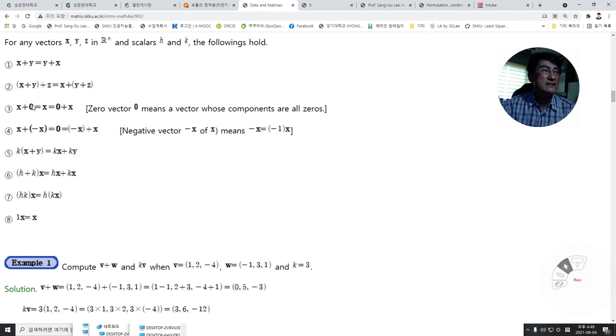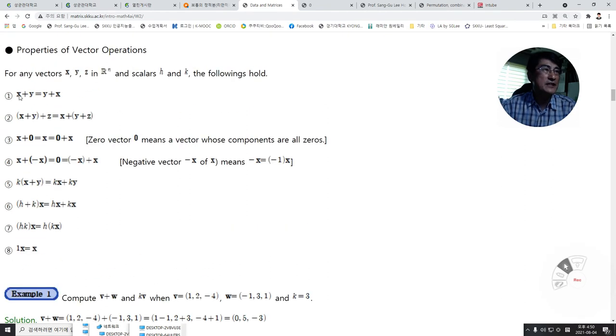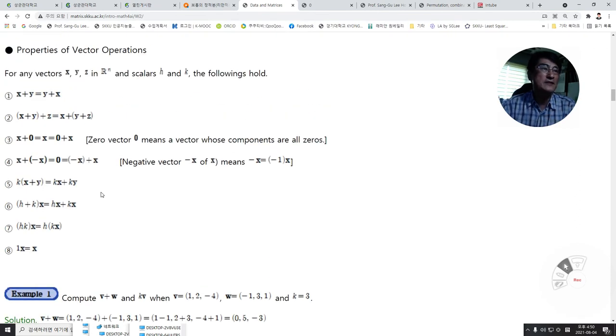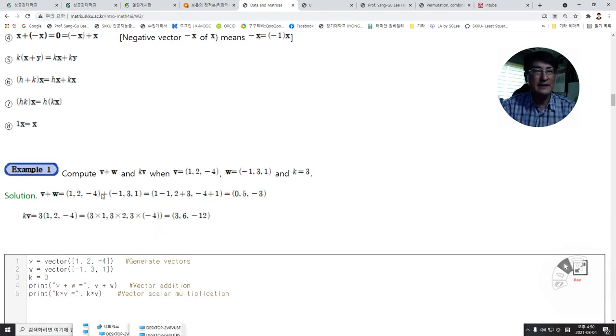There exists a zero vector whose components are all zeros in Rn, a negative vector minus x of x, and the associative law for addition and scalar multiplication. These eight conditions also hold for matrix operations that we will see next.